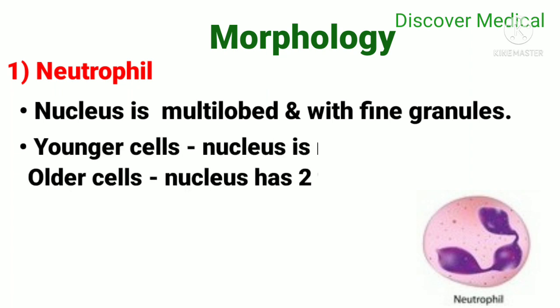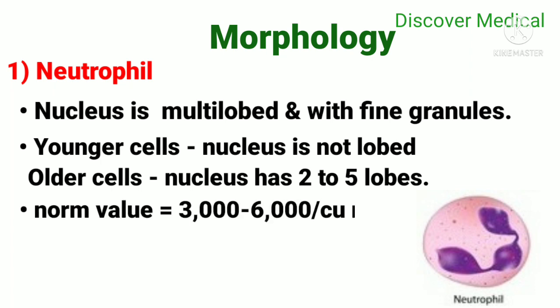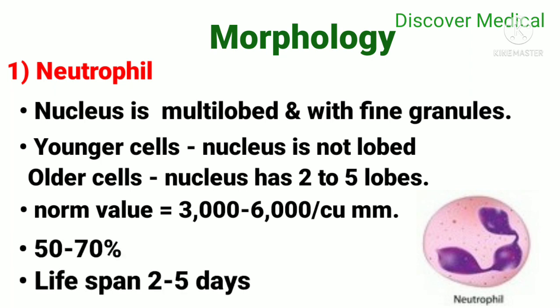The normal value for neutrophils is 3,000 to 6,000 per cubic millimeter, representing 50 to 70 percent of WBCs, and the lifespan is two to five days.